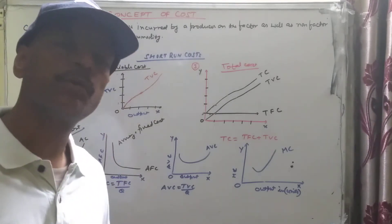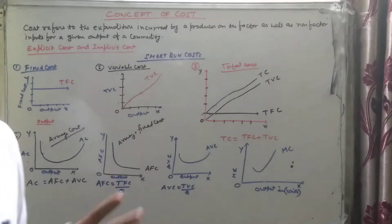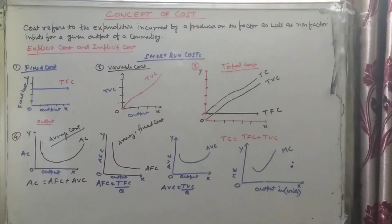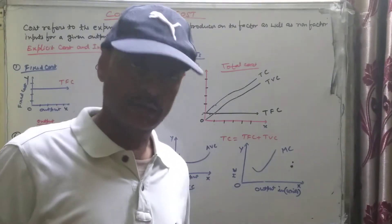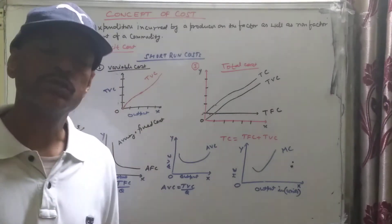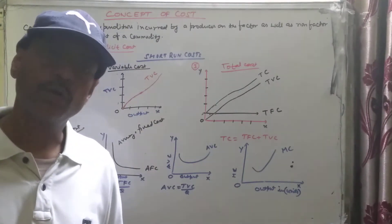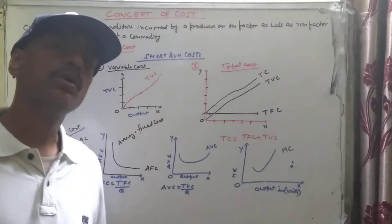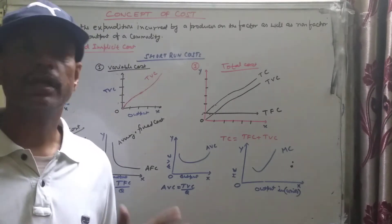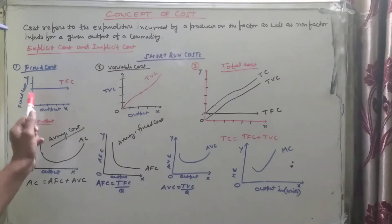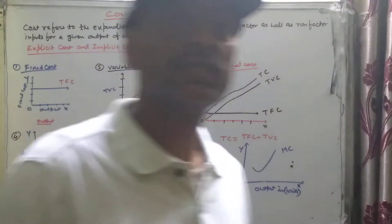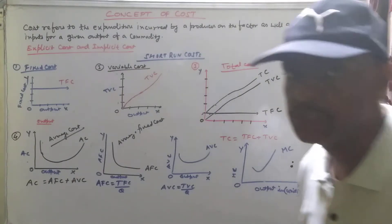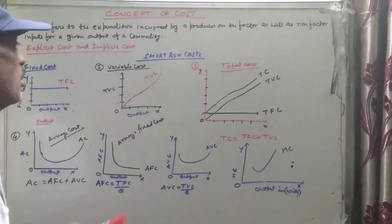Whatever the production level is, the fixed cost remains the same — there are no changes in the cost. For example, if you have built a building for your business, the cost of that building remains fixed regardless of how much you produce. Even at the zero level of output, the fixed cost is the same.